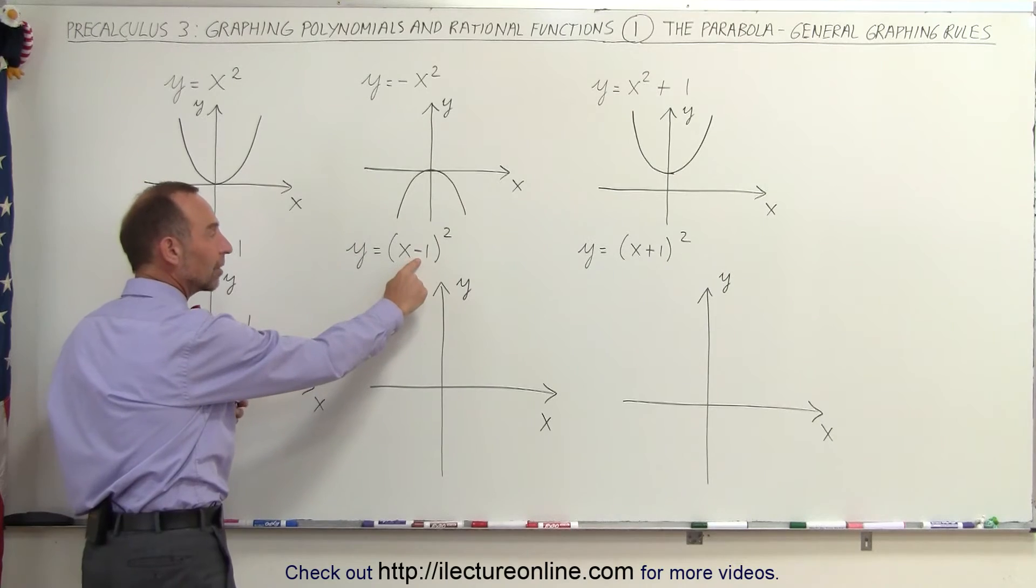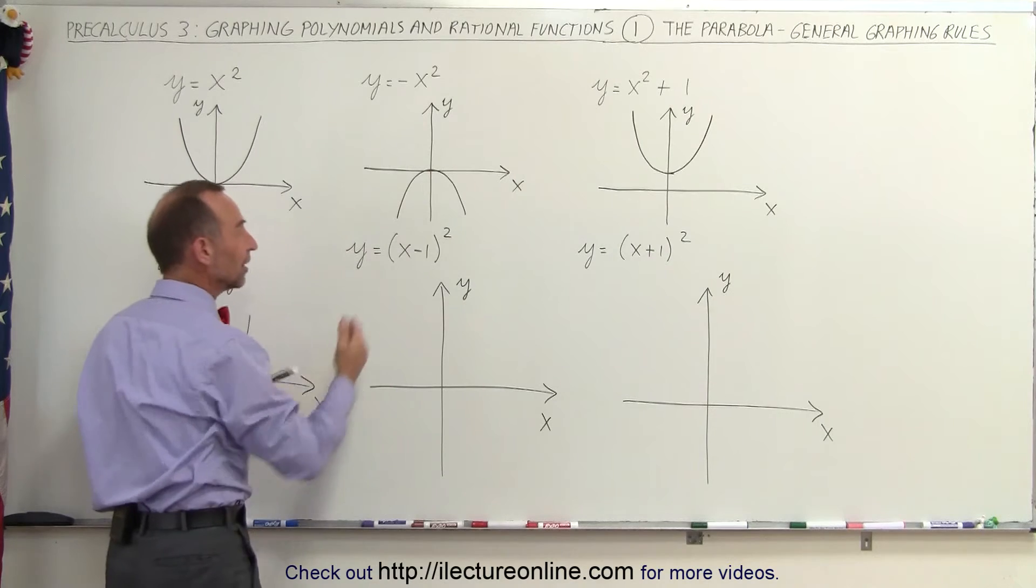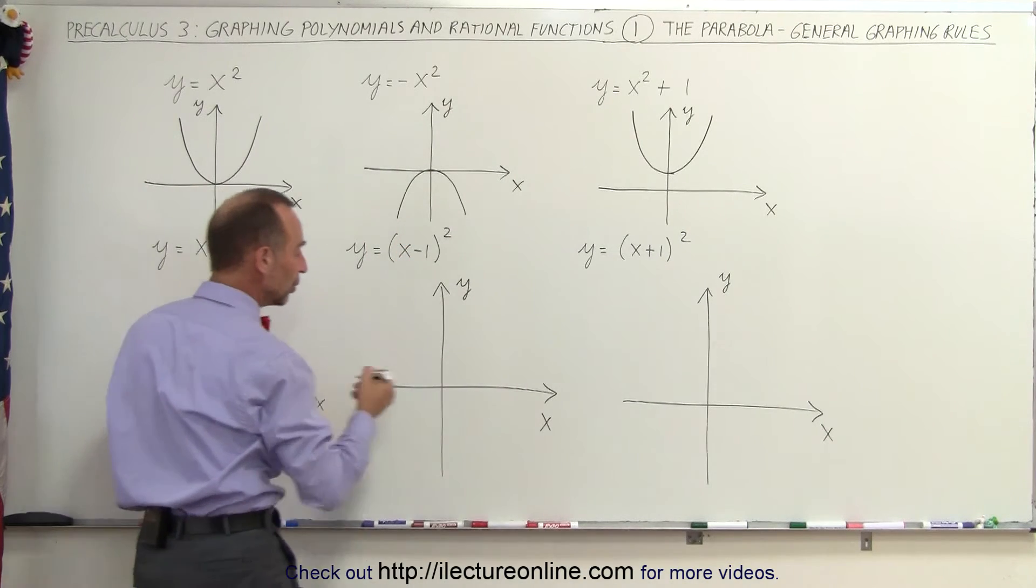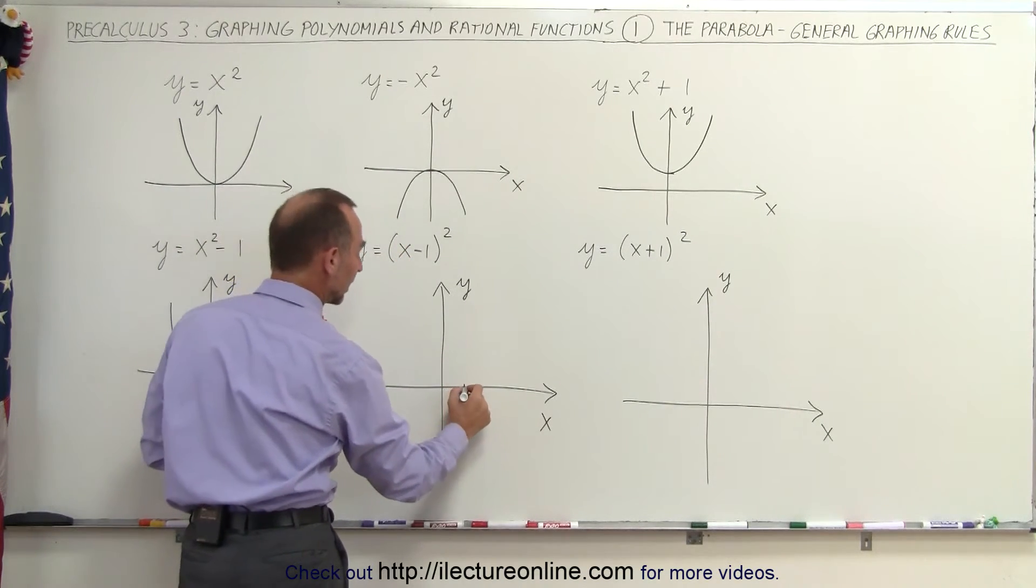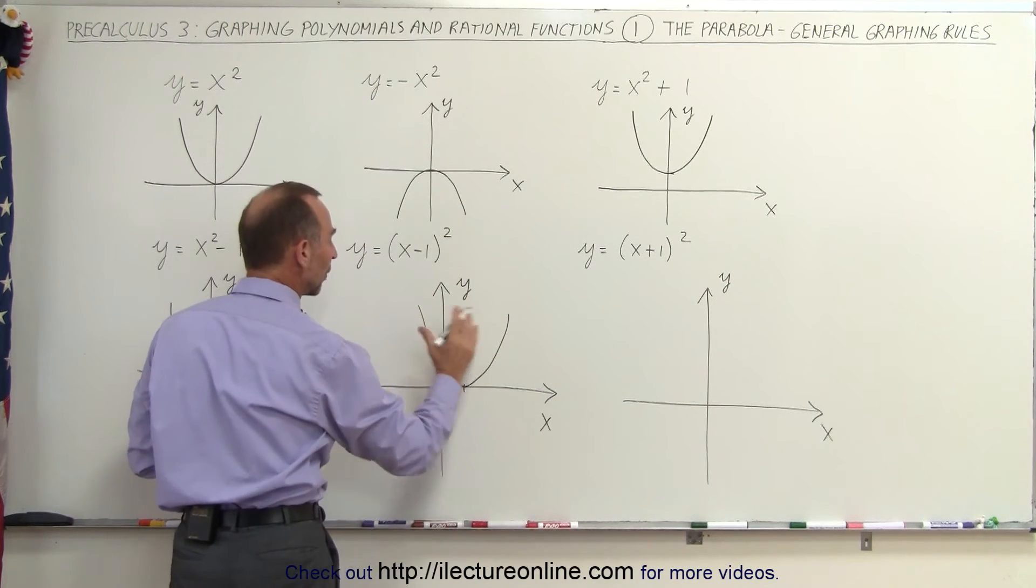If we subtract a constant, it makes it move to the right. If we add a constant, it makes it move to the left. In this case, it will make it move to the right by 1 unit. So we find x equals 1 right here, and our parabola will now look like this. The whole thing moved over to the right by 1.